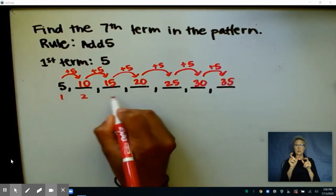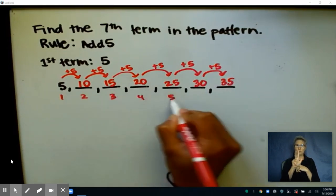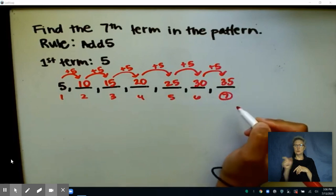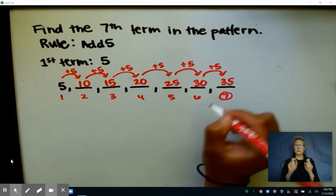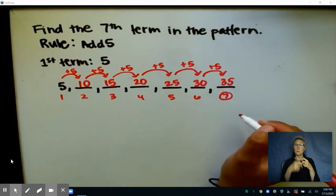Right? So I have one, two, three, four, five, six, seven. This is my seventh term in this sequence. So my answer to this would be 35.